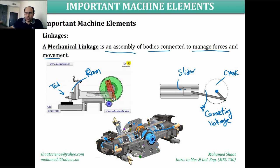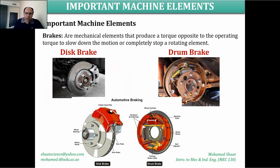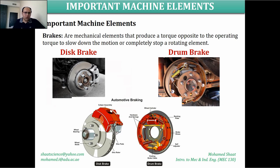Now we will discuss brakes. Brakes are important mechanical components — actually a system — used for slowing down or stopping a machine. Since any machine has movable components, we may need to instantaneously stop those components. Like your car — if you are driving without brakes, it doesn't work. These figures show different types of brakes used in vehicles, including the drum brake and the disc brake.